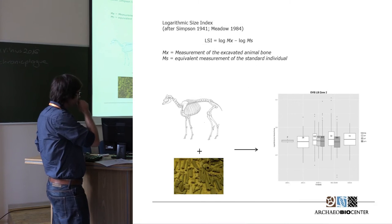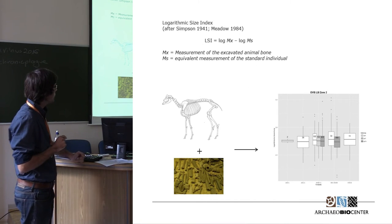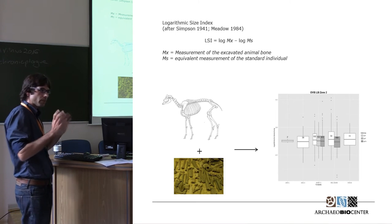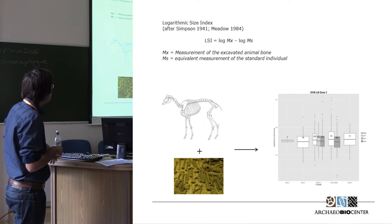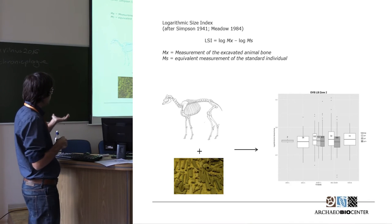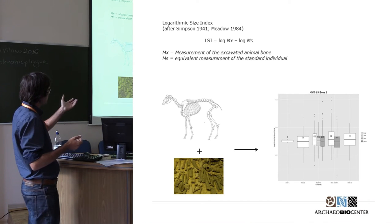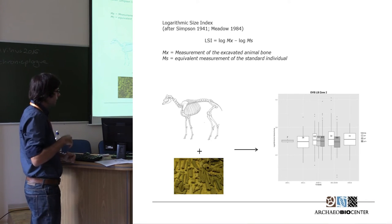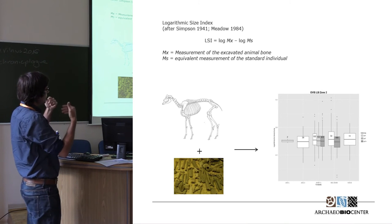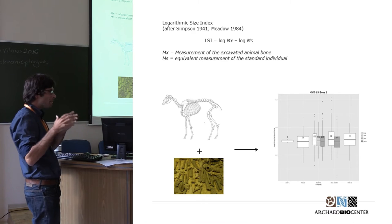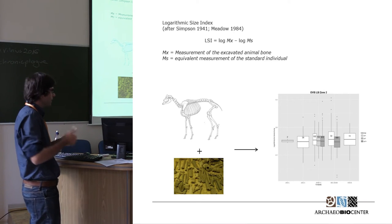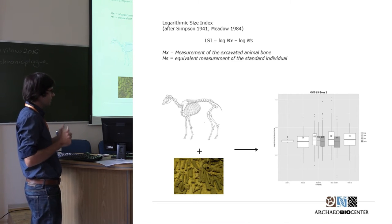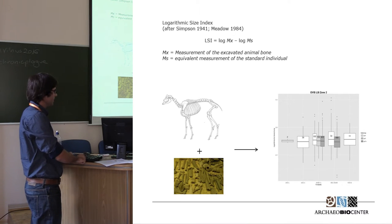How does this logarithm size index work? We need a standard individual as a baseline. In this case I have a sheep, and of course I also have one for cattle. I take the measurements from the archaeological bones we've excavated, and we can see in the box and whisker graphic that if we have a positive value, then the archaeological specimens were bigger than our baseline. If it's negative, then they were smaller. By the way, this box and whisker graphic was made by me three years ago and it's really awful — that's something to improve.